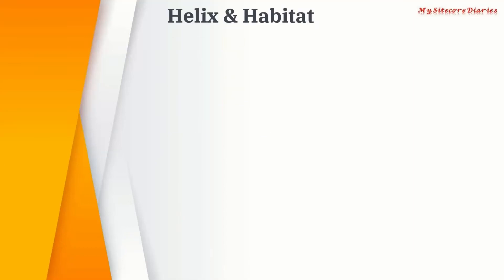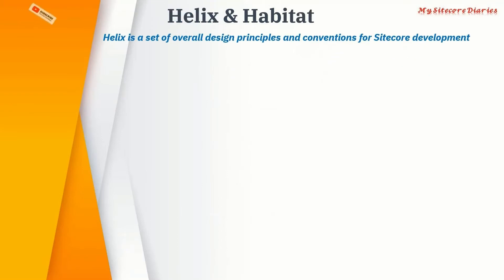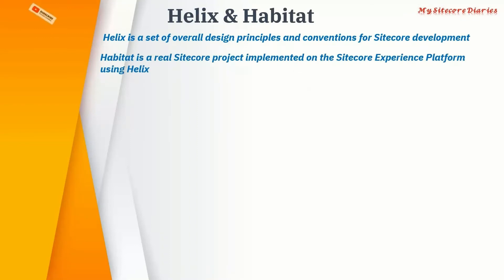Let's see what is Helix and Habitat. Helix is basically a set of overall design principles and conventions for site code development — it is a guideline for site code development. Habitat is a real Sitecore project implementation using those Helix principles.